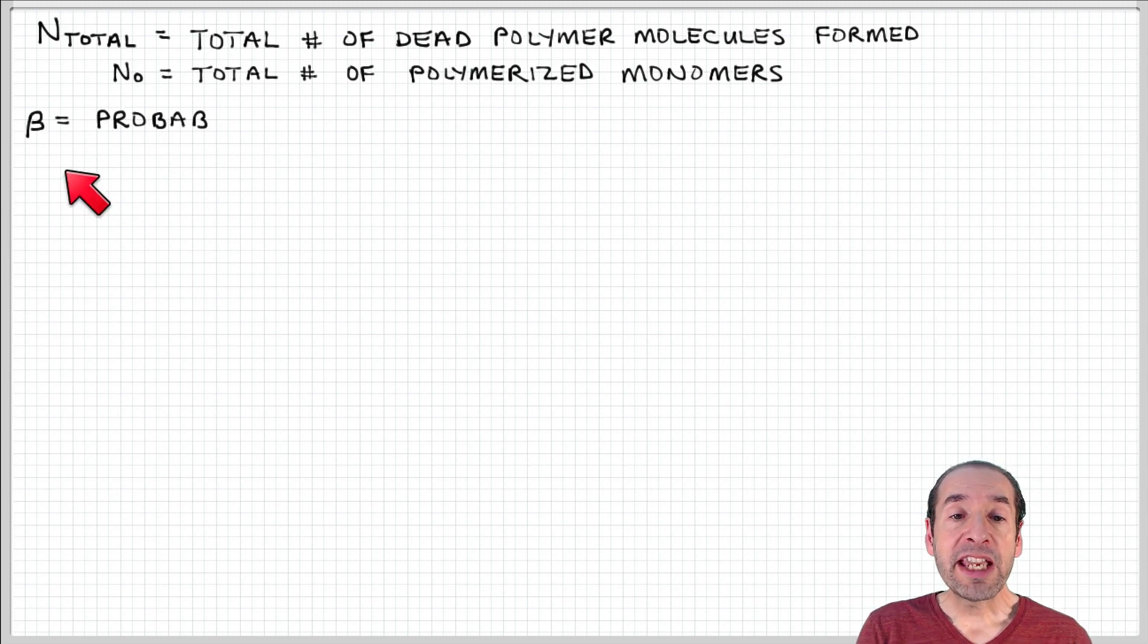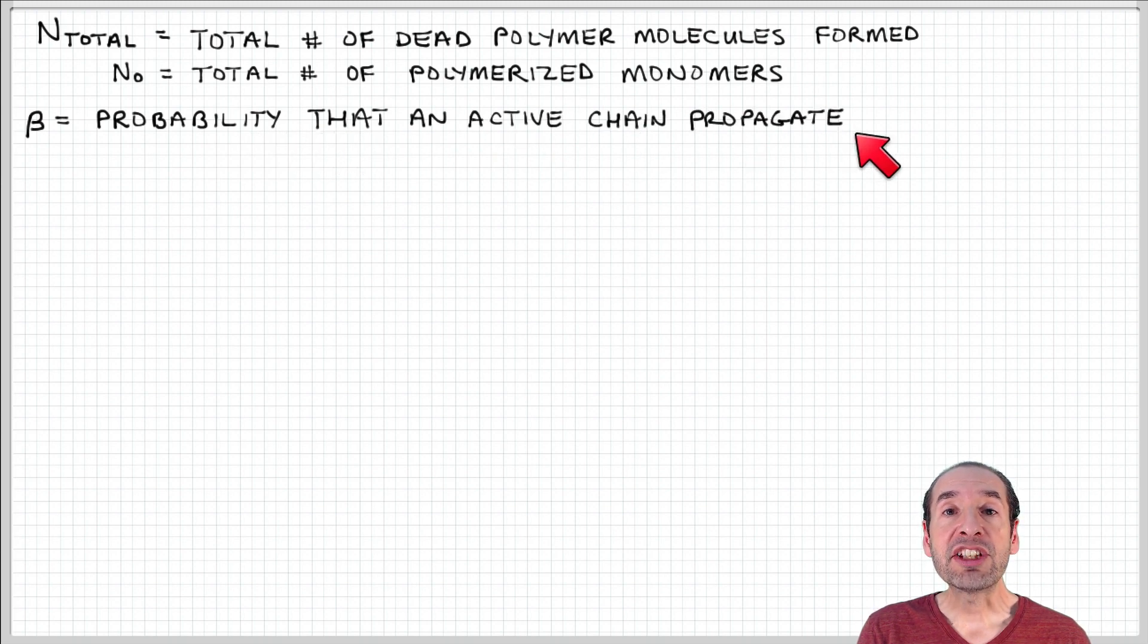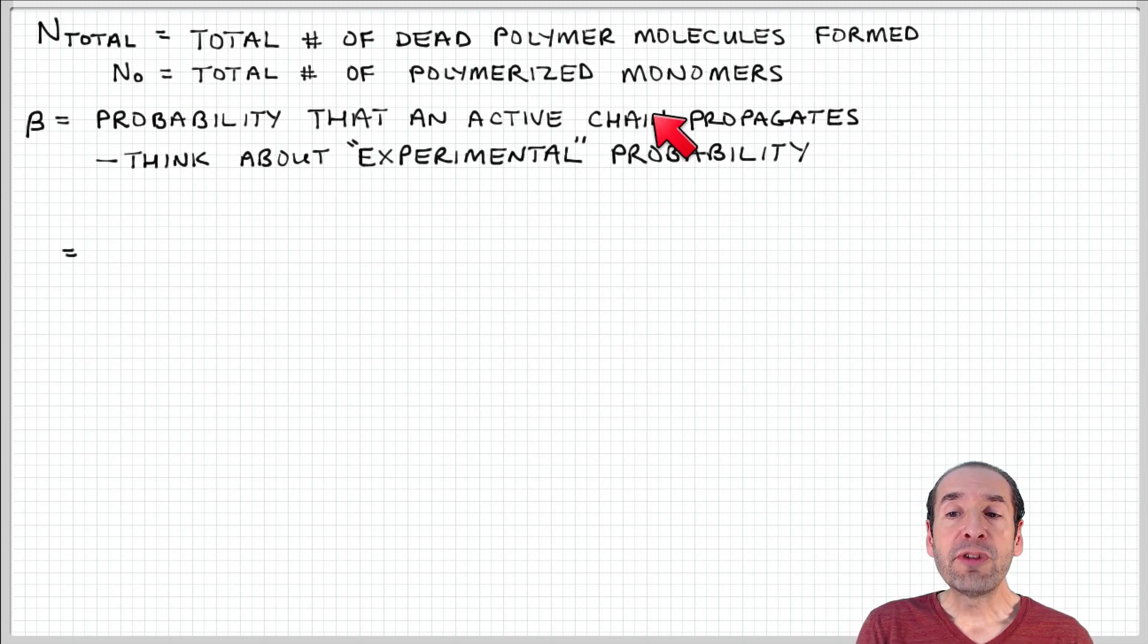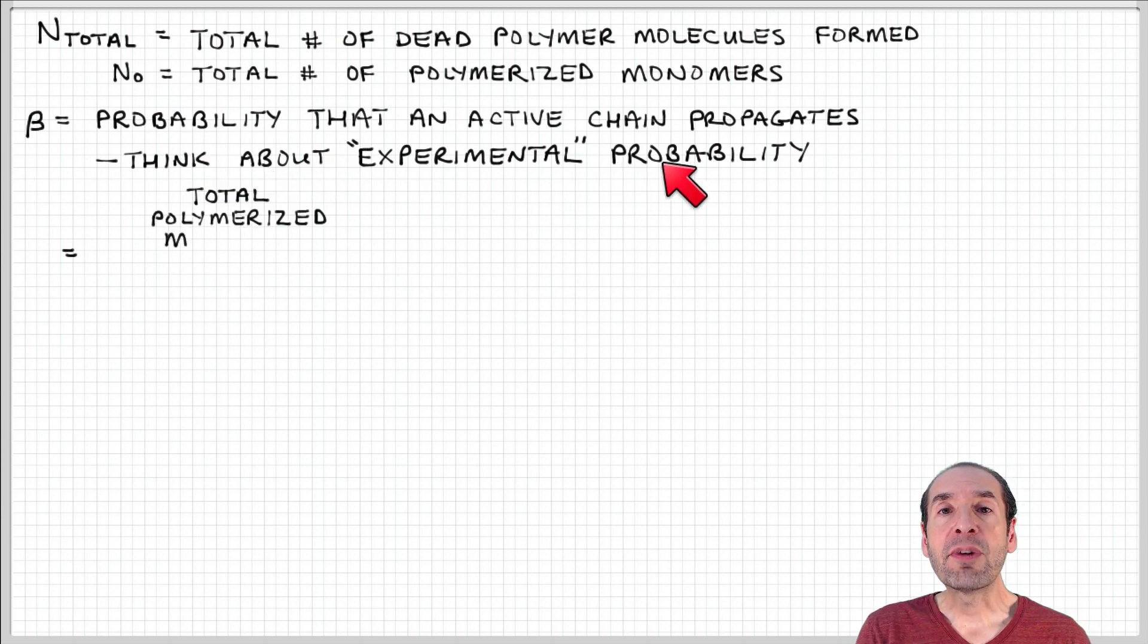This parameter beta represents the probability that a chain has experienced a propagation event versus a termination event. So it's useful to think of this in terms of an experimental probability. And by that, I mean we're counting events.